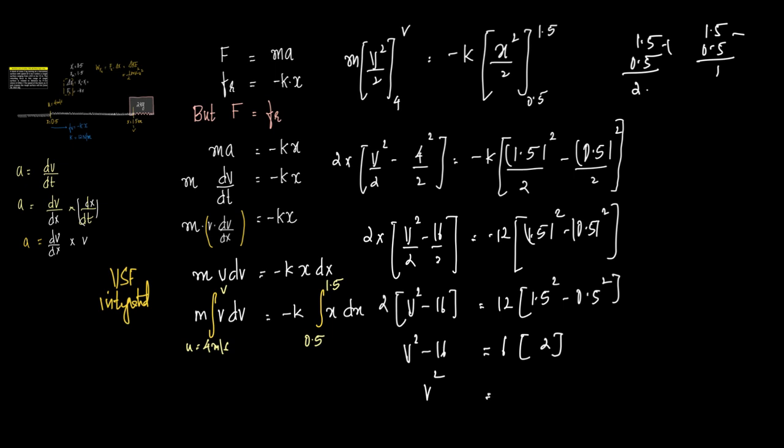So v square is equal to, 6 into 2 is 12. Wait, a plus b into a minus b, 1.5 plus 0.5 is 2, 1.5 minus 0.5 is 1. So 6 into 2 is 12. We did a small mistake here. There is a minus symbol here. Yeah, this is minus over here.